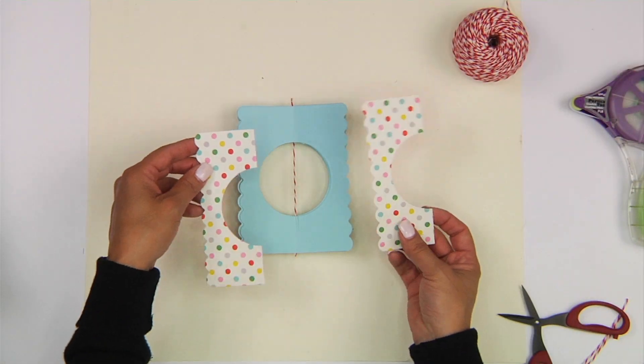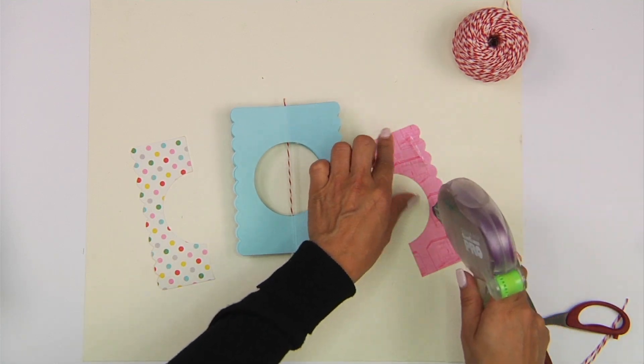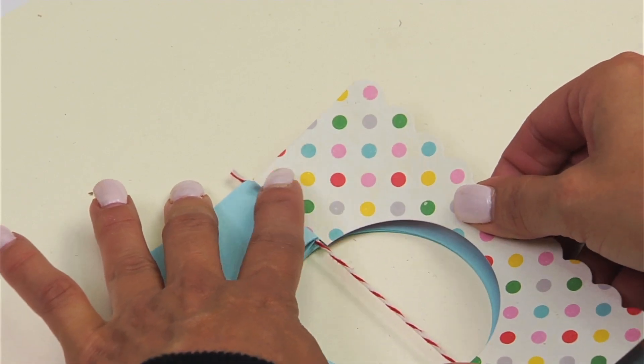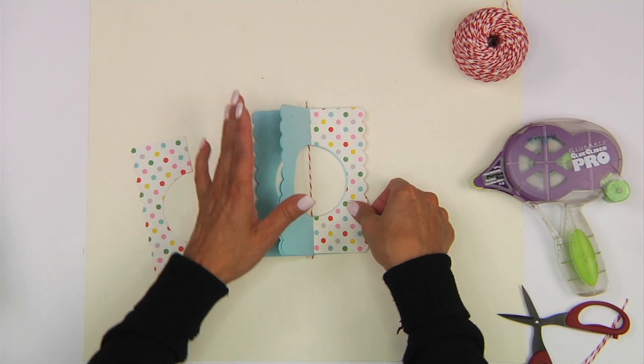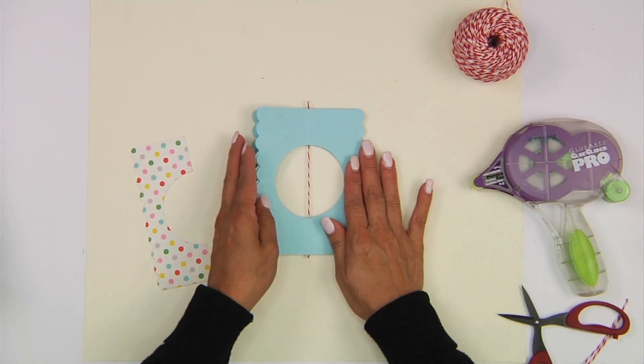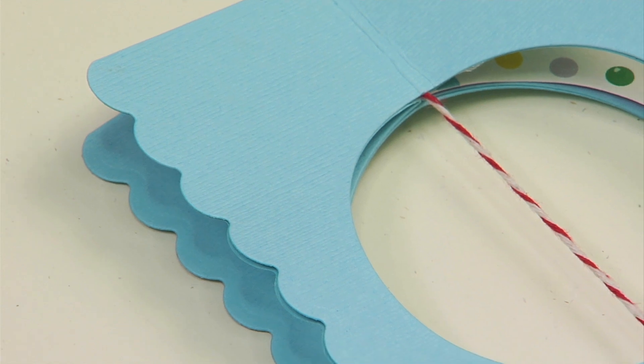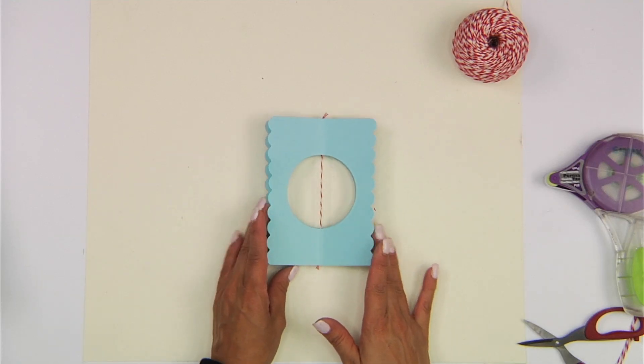Next, we'll go ahead and adhere our patterned papers that we cut in half. And one we're going to tuck right underneath our first layer, just like that. As you're assembling your card, you just want to take a little bit of time to make sure all your edges align.